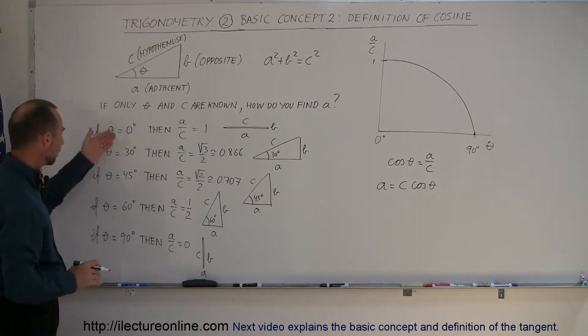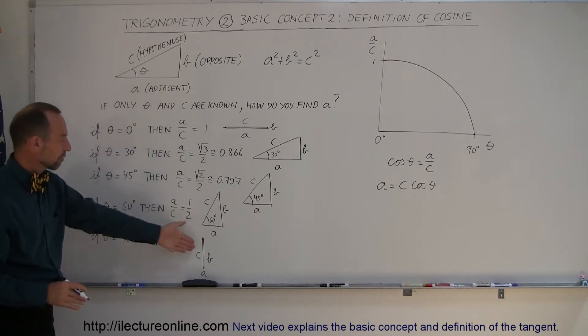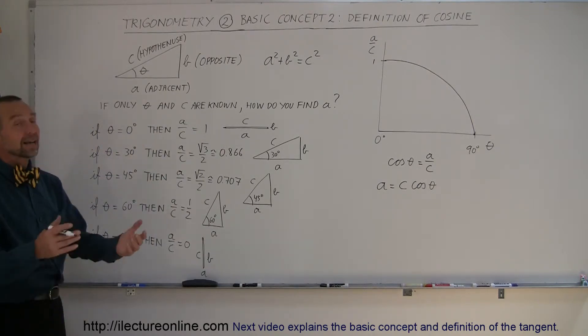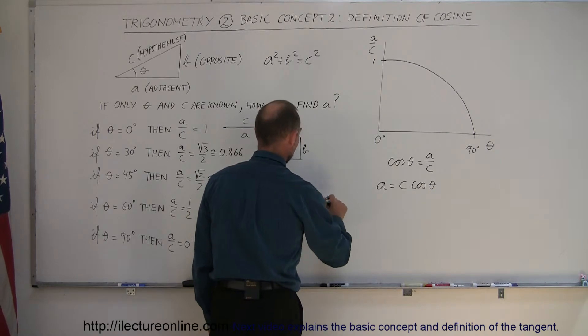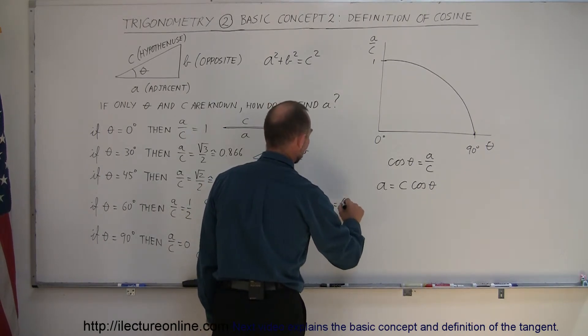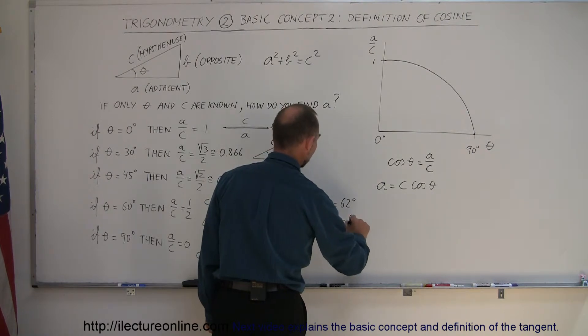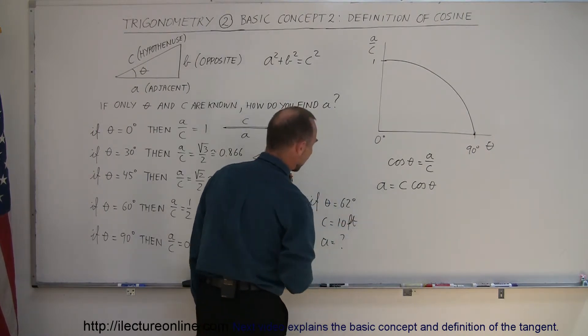Of course, if the angle is one of these numbers, it's fairly straightforward to figure out what it is, but what if the angle is something different? What if theta is equal to, let's say, 62 degrees, and c is equal to 10 feet, then what would a be equal to?